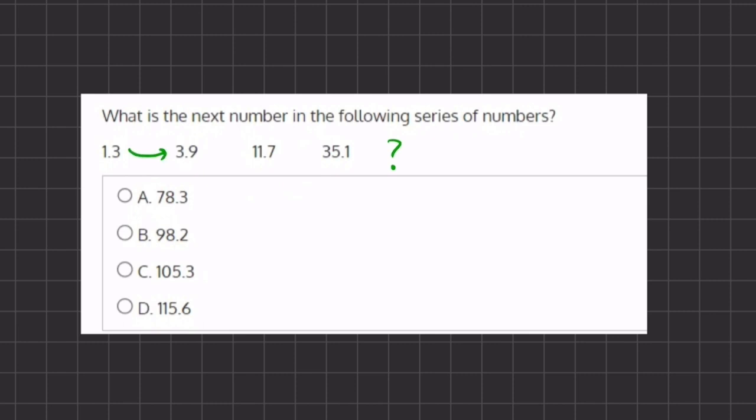Going from 1.3 to 3.9, we are multiplying by 3. Now you can tell this by checking the number, the whole number, and the decimal. If we multiply the 1 by 3, we get 3.